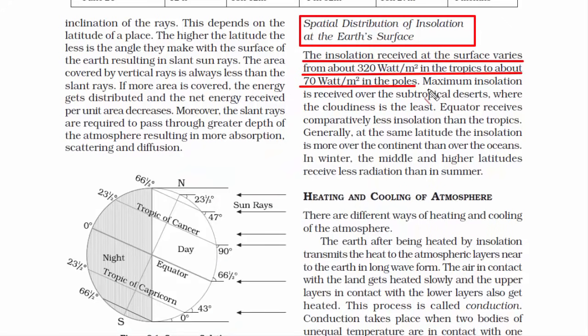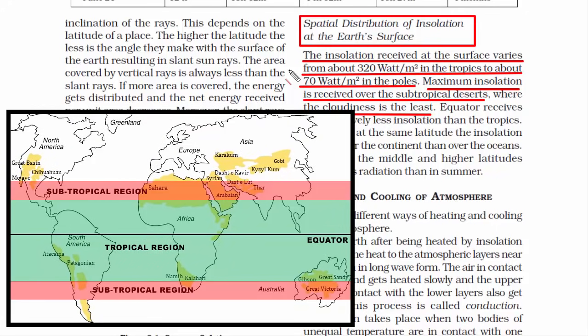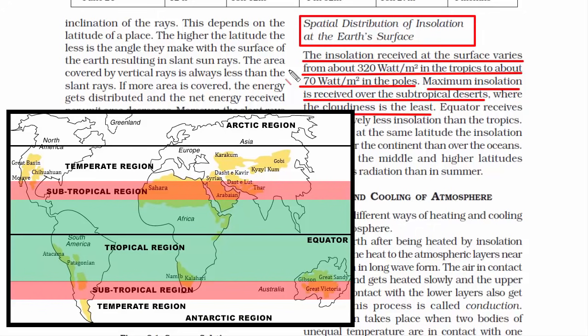Maximum insolation is received over the subtropical deserts where cloudiness is the least. If you look at the world map, there are very few deserts in the tropical region. Most deserts exist in subtropical, temperate, and polar regions — basically away from the equator. And in case you're wondering why Antarctica and the Arctic region are counted as deserts — not every desert is hot. A desert is a region that receives an extremely low amount of precipitation, has minimal vegetation, and very little fauna.